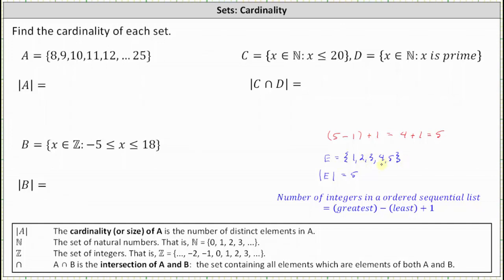So now going back to set A, if we don't want to count the number of elements in the set one by one, we can use the formula: the greatest value of 25 minus the least value of 8 plus 1 will give us the number of elements in the set. Well, 25 minus 8 is equal to 17. 17 plus 1 is equal to 18. There are 18 elements in set A, and therefore the cardinality of set A is 18.